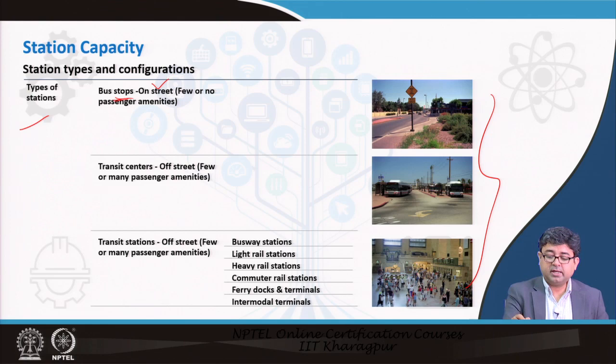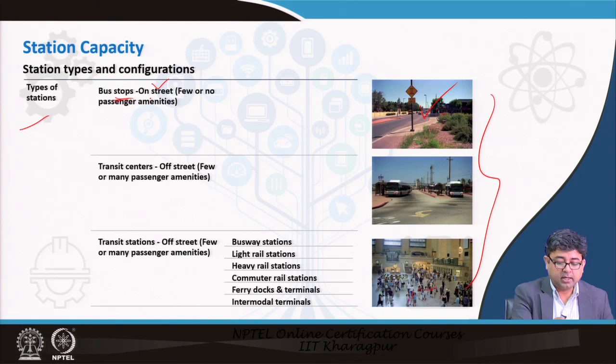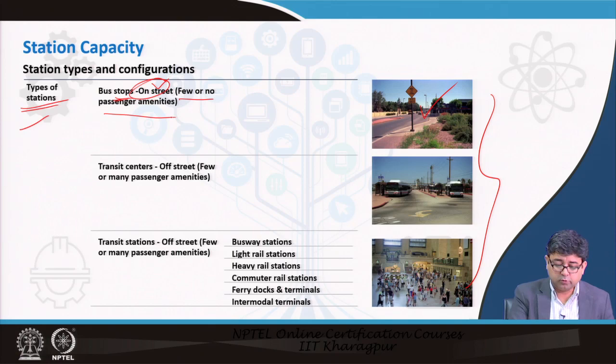The first category is bus stops — on-street bus stops — which may be just a sign mounted on a light post. That is also a station; that is where people get on and off a bus. This is an on-street station where few or no passenger amenities may be available. There may not even be a bench, some lighting may be available, but there is no cover from rain, no shelter — it is just a basic bus stop.